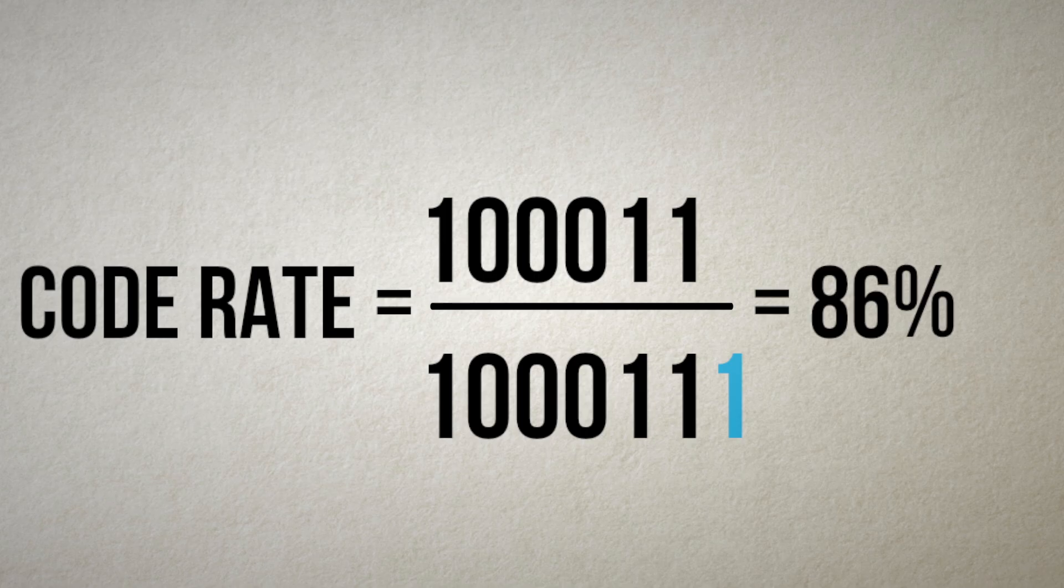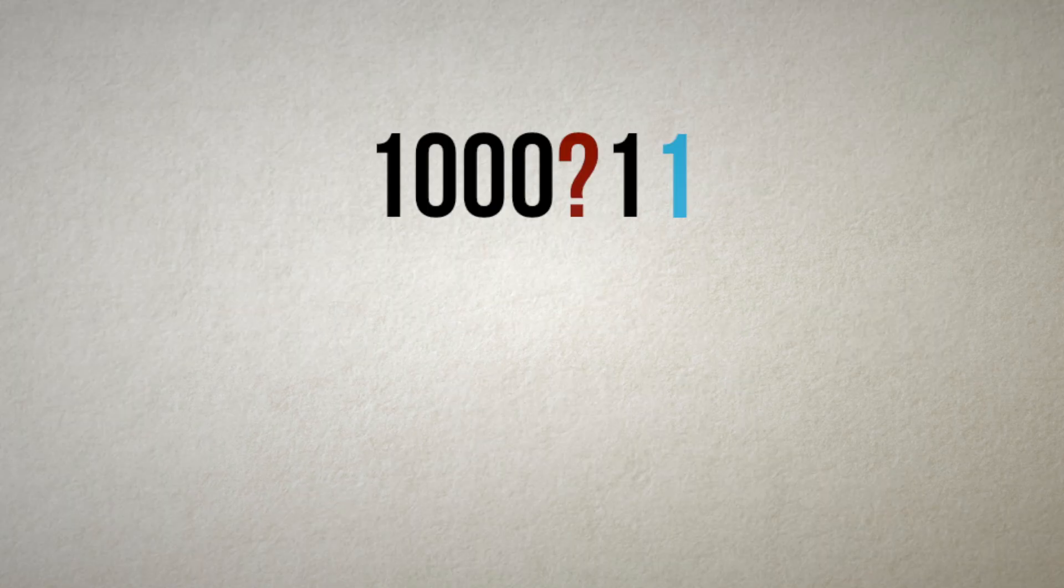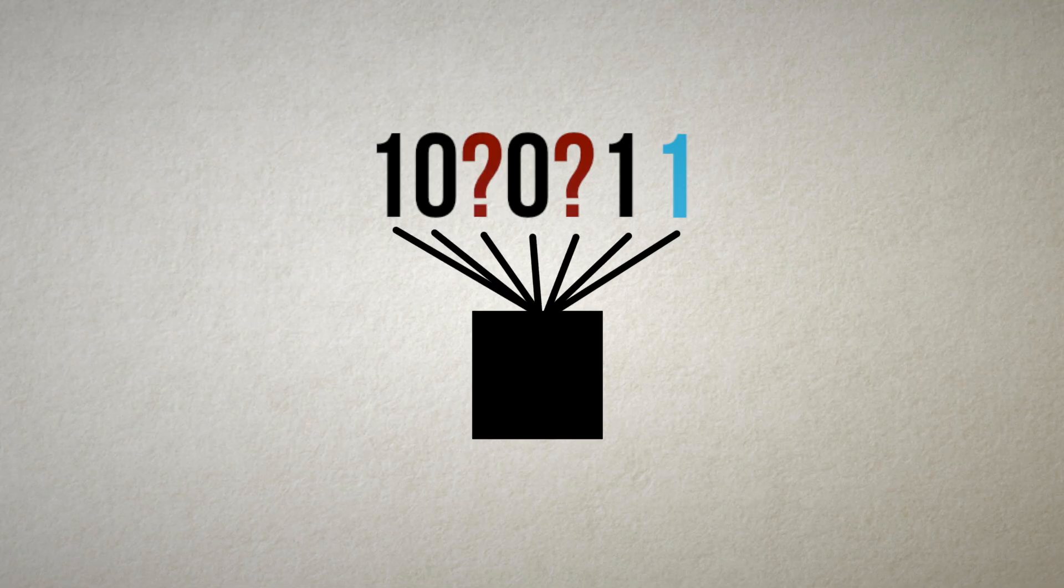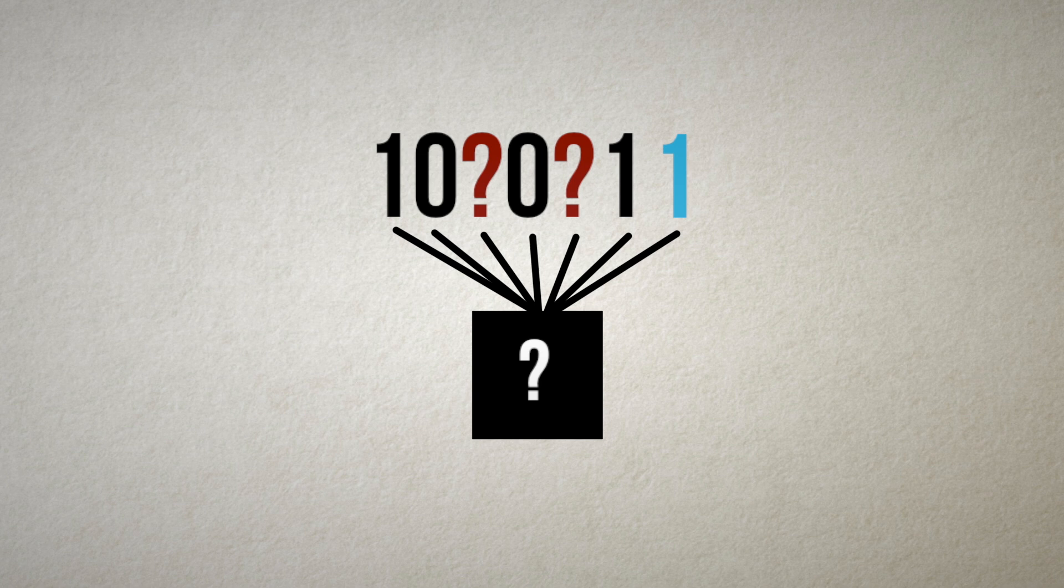However, the chance of failure has increased compared to repetition. With a single parity check bit, we can only correct a single erasure, and if two or more erasures occur, the code fails because there isn't enough information to reconstruct the bits.